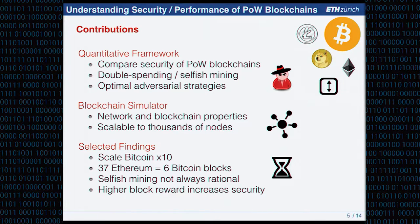We can compare objectively different blockchains — for example, we find 37 Ethereum block confirmations are equal to six Bitcoin block confirmations. We show that selfish mining is not always a rational strategy. And we show that the higher the block reward of a blockchain, the higher the security — which is particularly important if the block reward goes down in the future or if there's a halving.